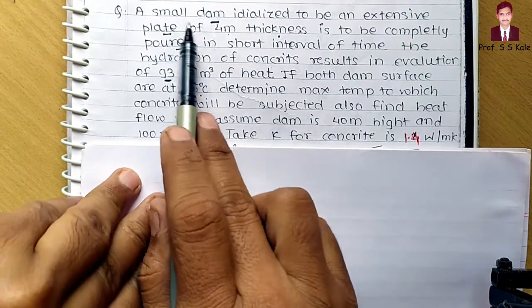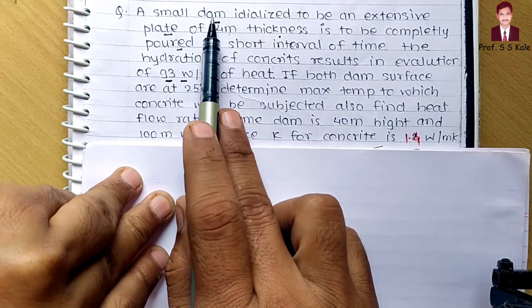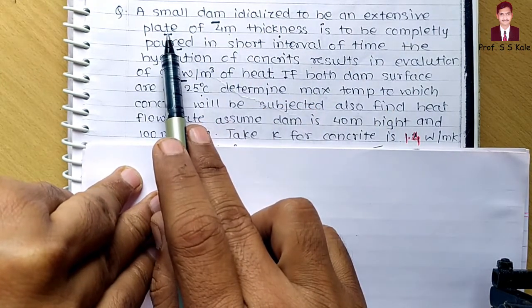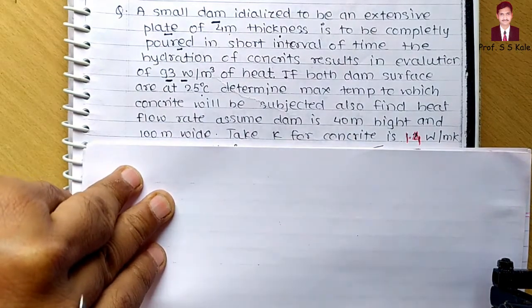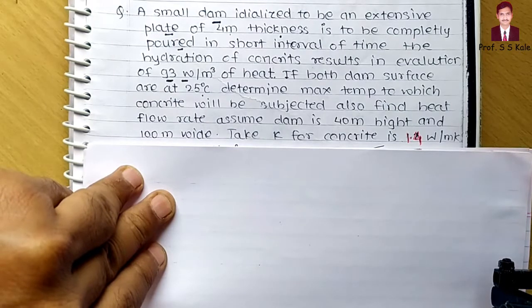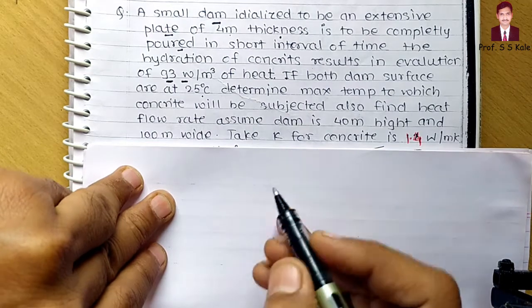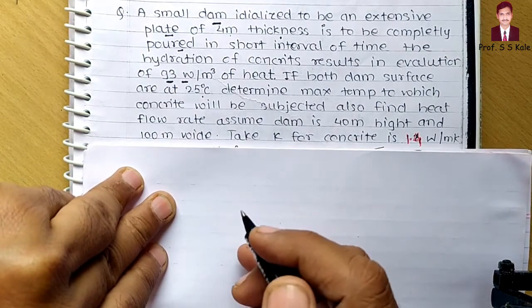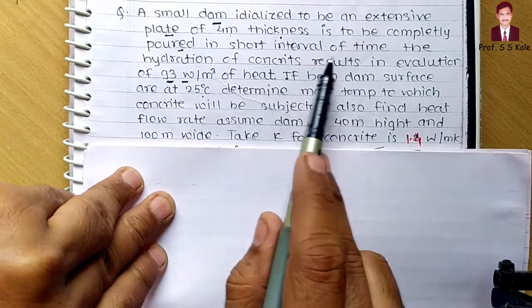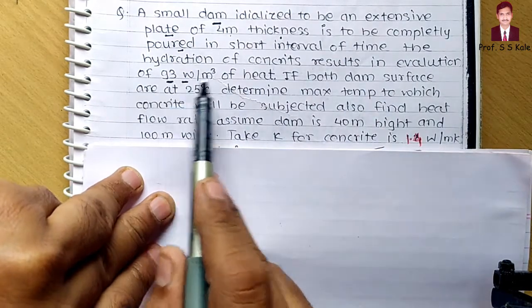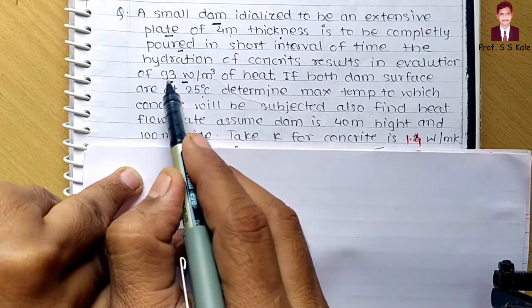Let's try to understand this particular problem. A small dam, idealized to be an extensive plate — we know that on a river we build a dam to store water, so that dam wall is idealized as an extensive plate. The dam can be considered as one plate of four meter thickness, to be completely poured in a short interval of time. When building with concrete, concrete hydration occurs — meaning all water is removed — and when this process happens, a lot of heat is generated. The hydration of concrete results in evaluation of heat, and that heat is given as 93 watt per meter cube.